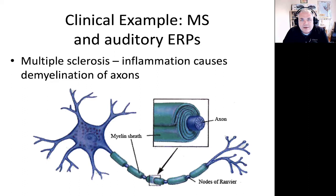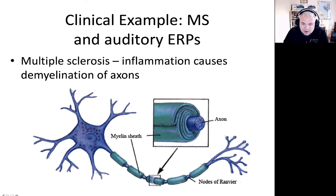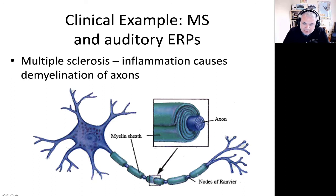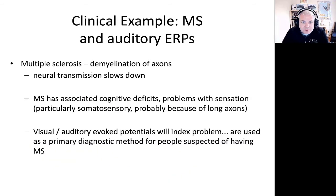Let's look at a clinical example using an auditory event-related potential. Multiple sclerosis is inflammation that causes demyelination of axons. The axon is covered in myelin sheaths — little pockets of fat — that speed up the action potential. In MS, these fat sheaths degrade, slowing down the action potential and therefore slowing signal processing in the brain. This causes associated cognitive deficits and is why multiple sclerosis is such a serious disease.